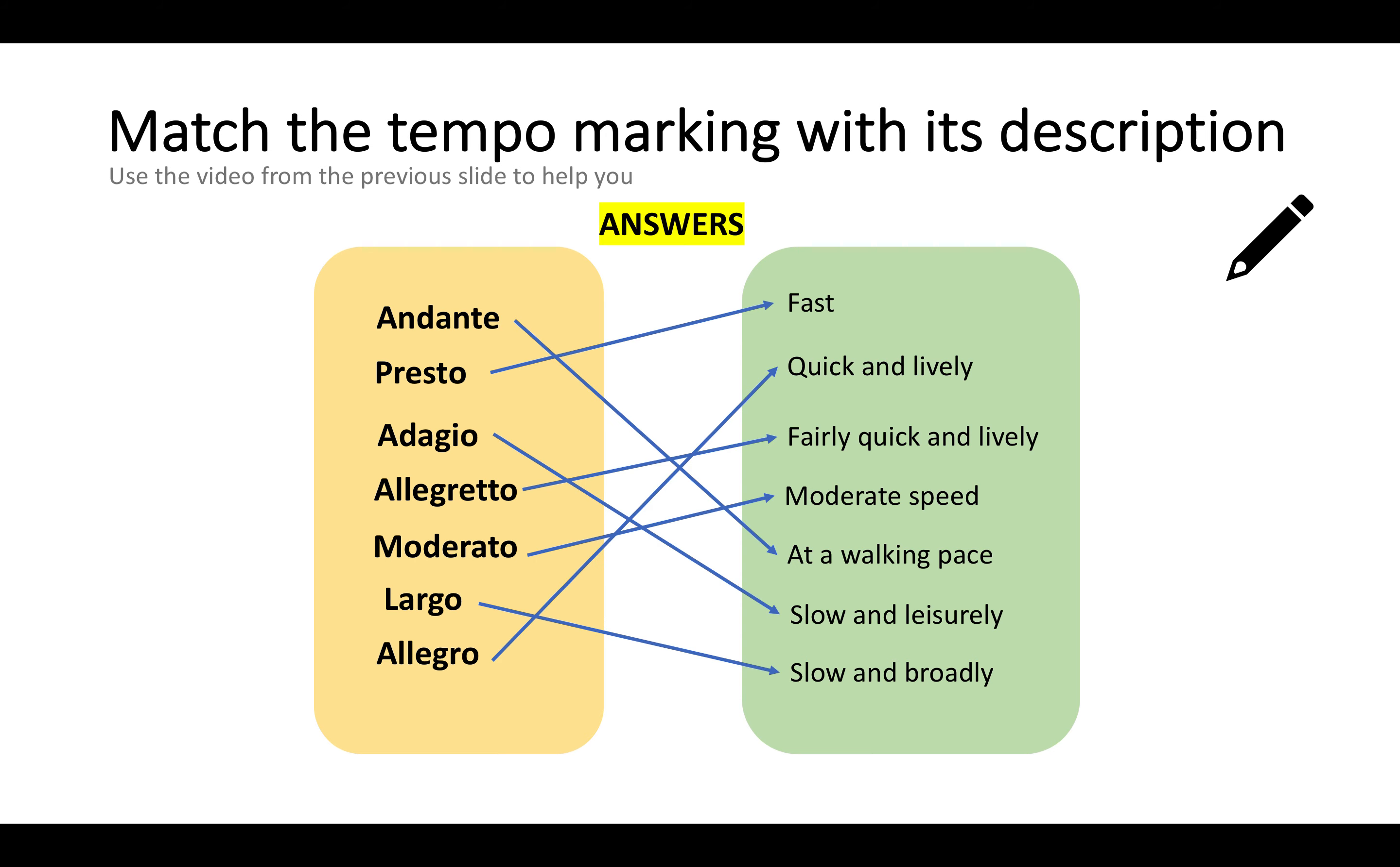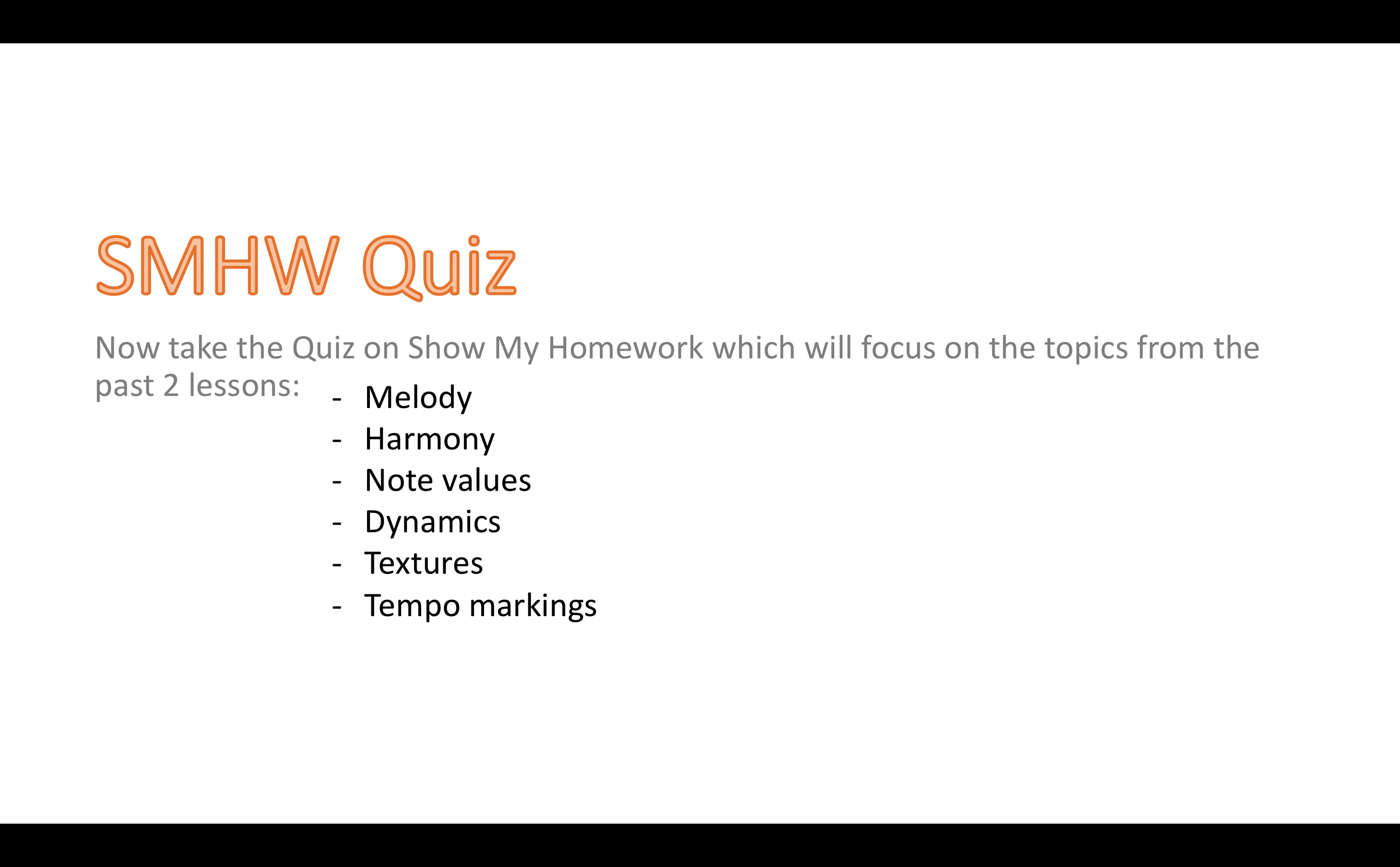Let's find these answers now. So here are the correct answers. And these Italian words are going to crop up a lot. Sometimes in your GCSE listening paper, you might have a piece of music you never heard before. It might be quite fast. And the paper might say, give an Italian term that best describes this tempo. So you might write presto, because you know that that means fast. So it's really important that we learn these. So make sure you've got these really clearly in your notes. And you might need them in the Show My Homework quiz as well, because that brings us to the end of the lesson.